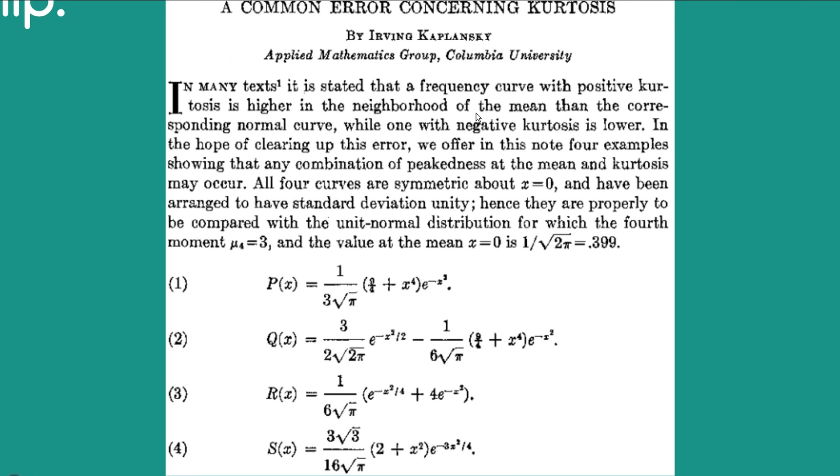So here's the paper, 'A Common Error Concerning Kurtosis' by Irving Kaplansky from Columbia University. So in the hope of clearing up this error, we offer in this note four examples showing that any combination of peakedness at the mean and kurtosis may occur.